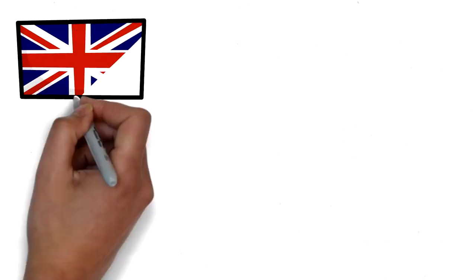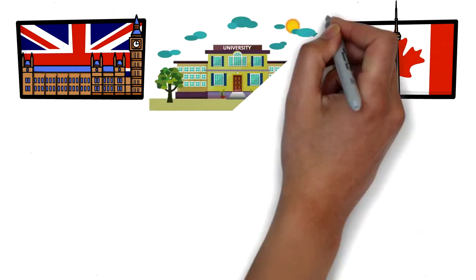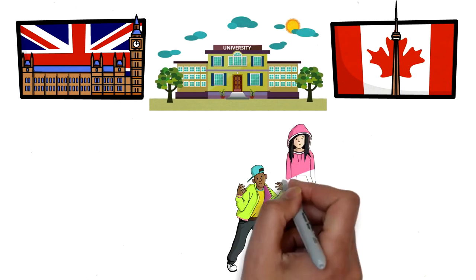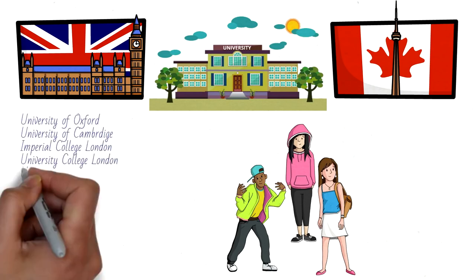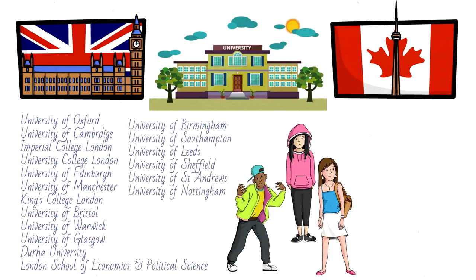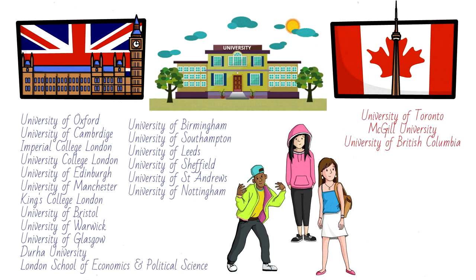For higher education, both countries provide world-class education and are well-established leading study destinations. Students will have opportunities to experience vastly different cultural and natural environments. Comparing top universities: UK has 18 institutions in the global top 100, including the University of Oxford, University of Cambridge, Imperial College London, University College London, and the University of Edinburgh. Canada has only 3 in the top 100: University of Toronto, McGill University, and the University of British Columbia.